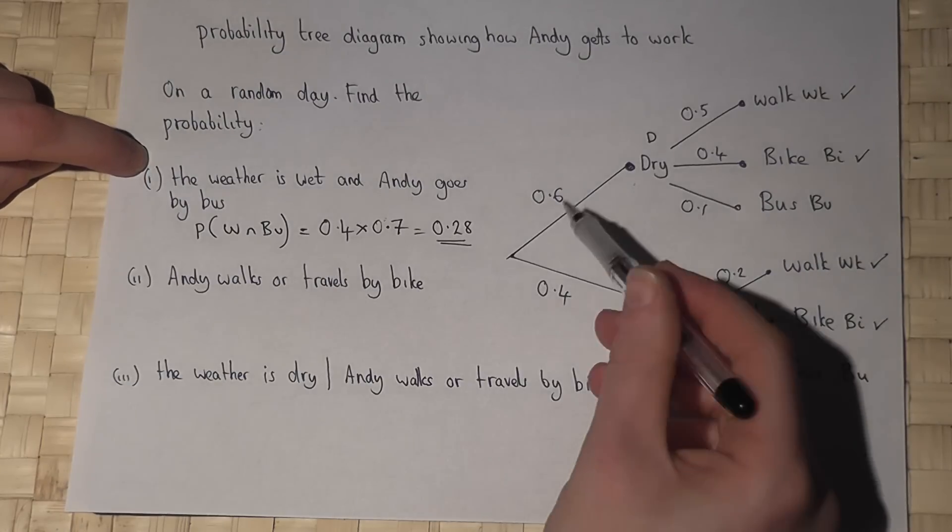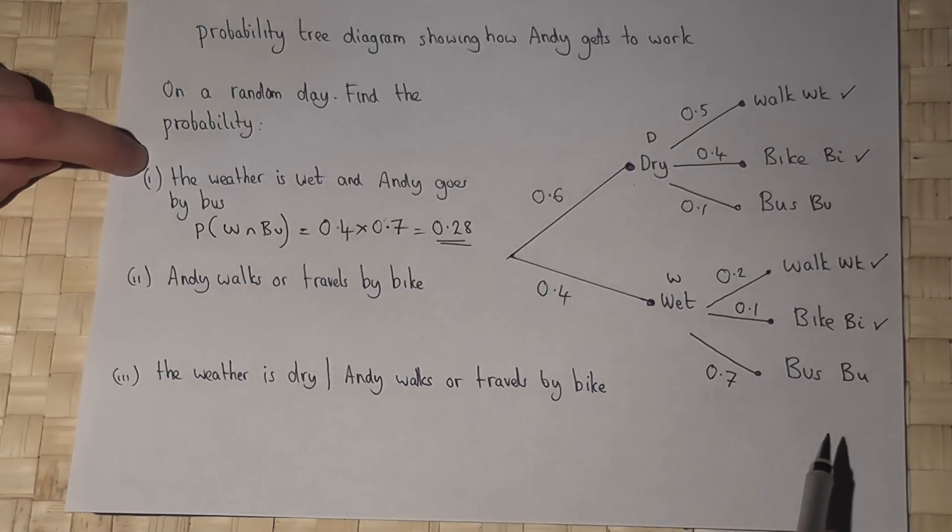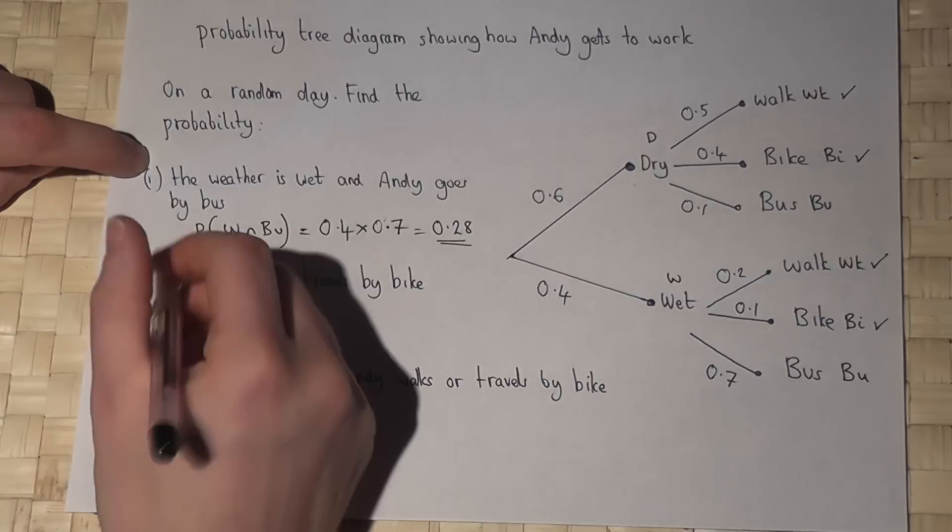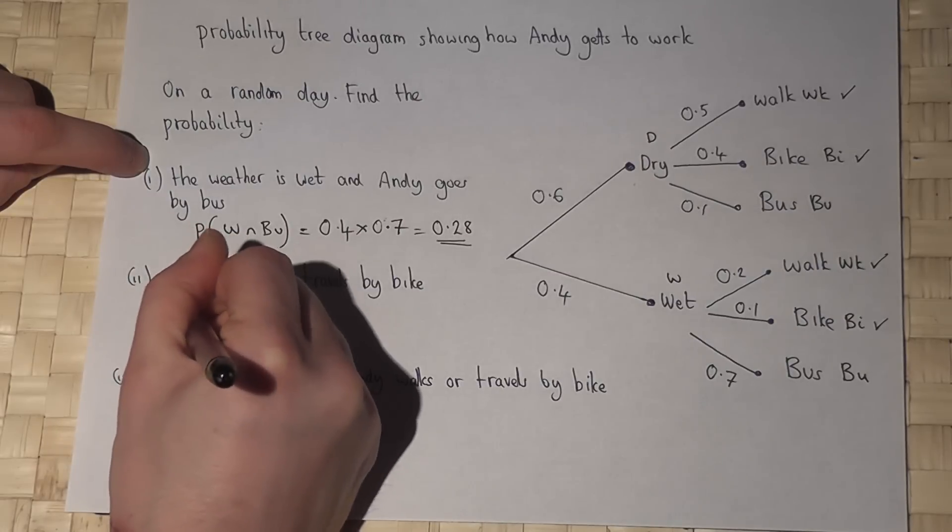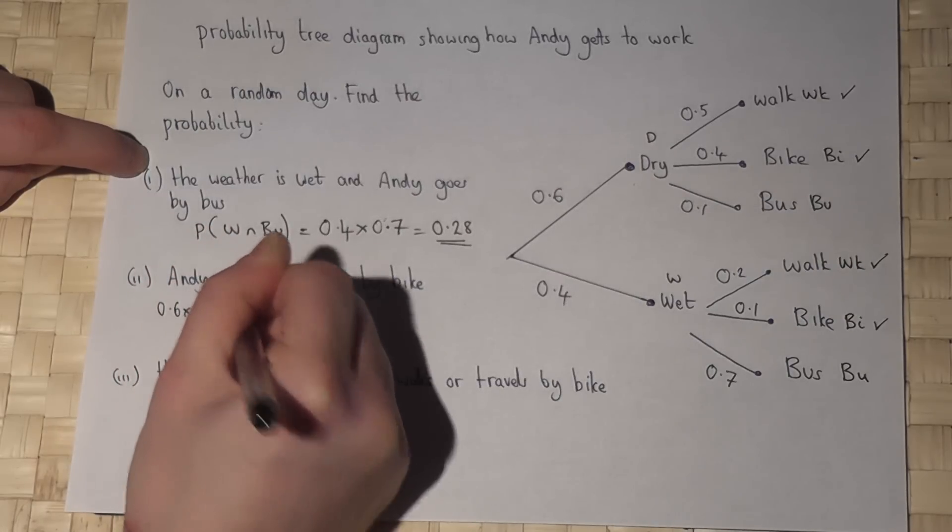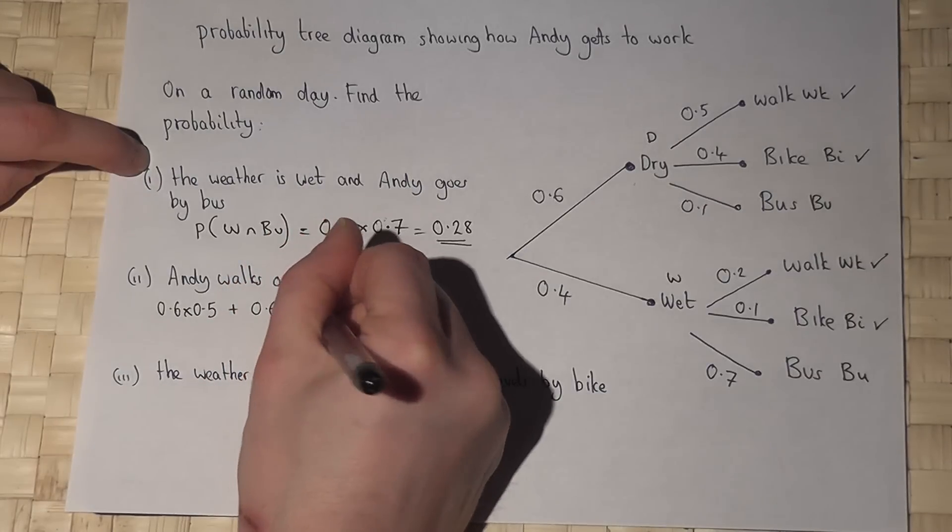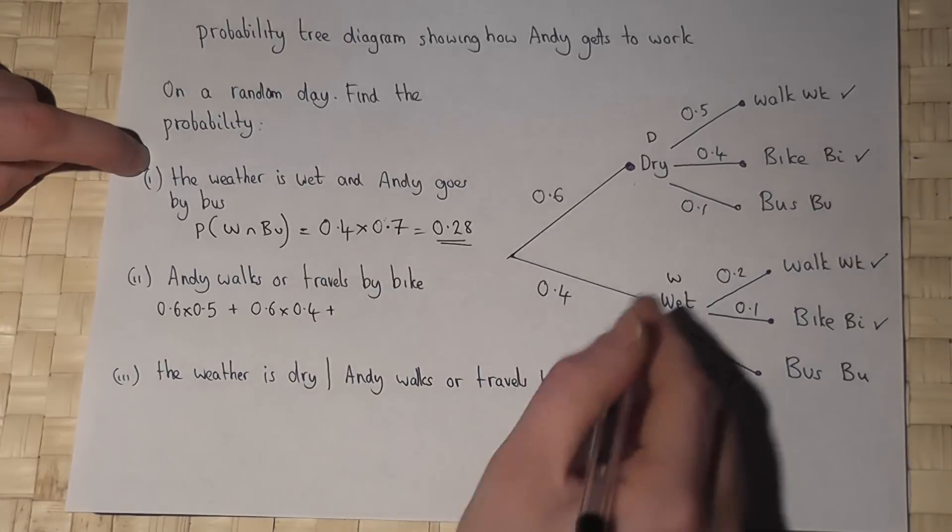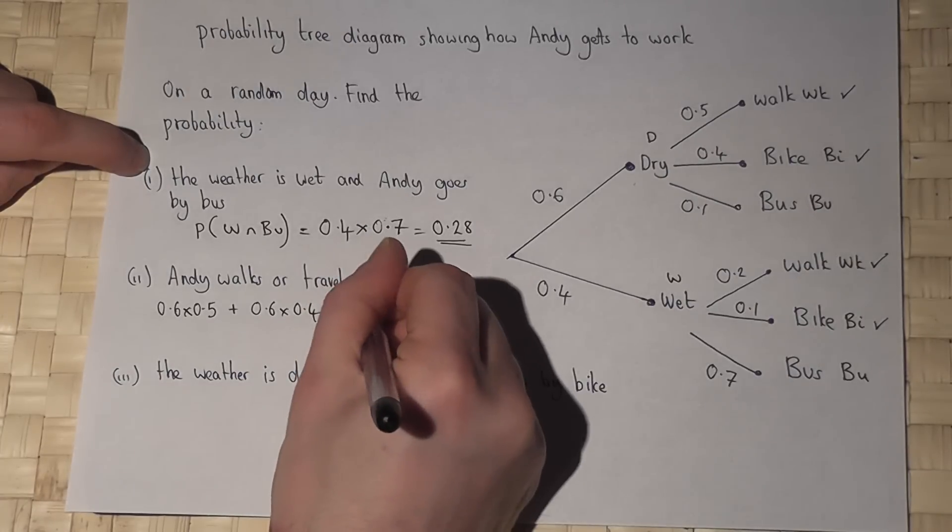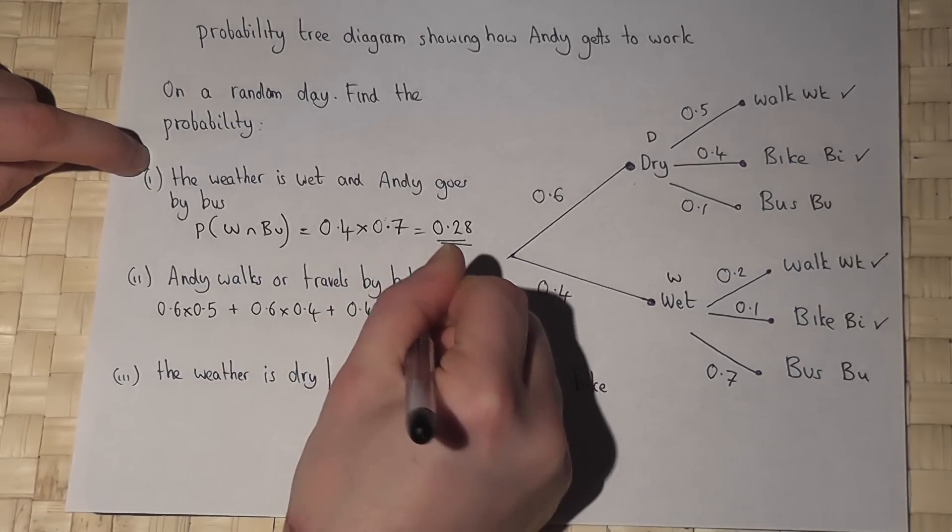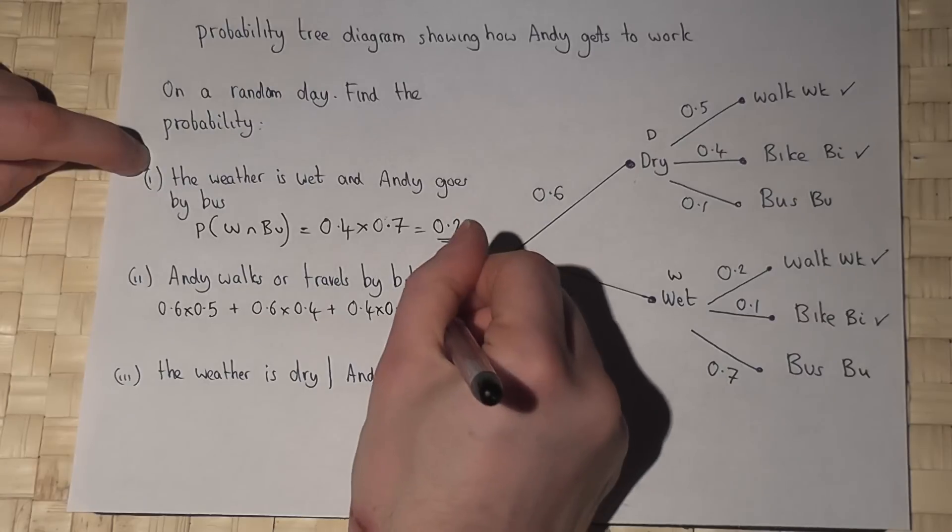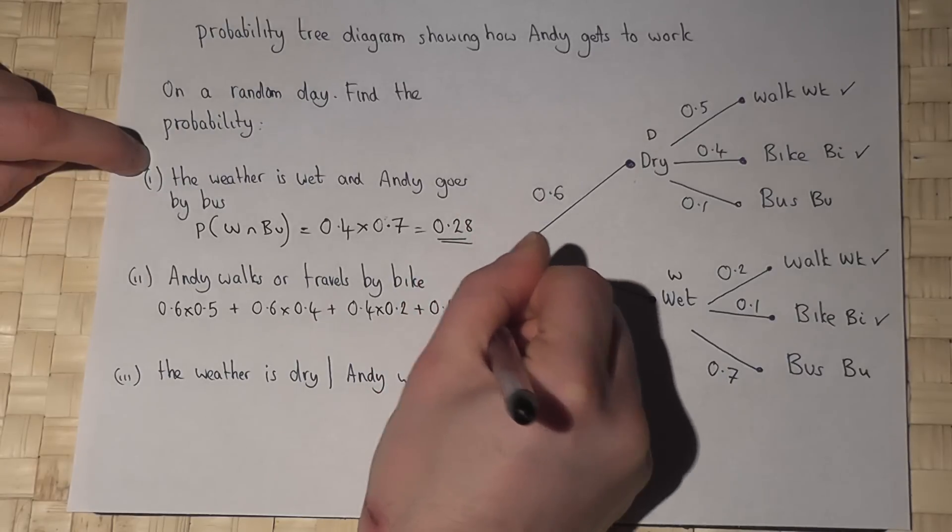So we've got to find out each of these four options and then add them together. So we've got 0.6 times 0.5 plus 0.6 times 0.4 plus 0.4 times 0.2 plus 0.4 times 0.1.